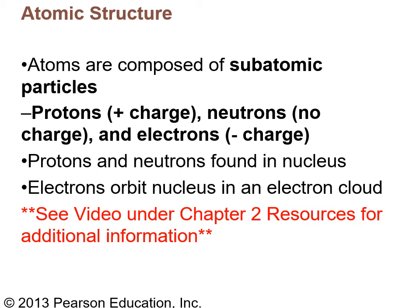Now, the atoms that make up an element have a common structure — they're composed of subatomic particles. There are protons, which have a positive charge; neutrons, which have no charge; and electrons, which have a negative charge. The protons and neutrons are found in the middle of the atom in a place called the nucleus, and the electrons orbit the nucleus in an electron cloud.